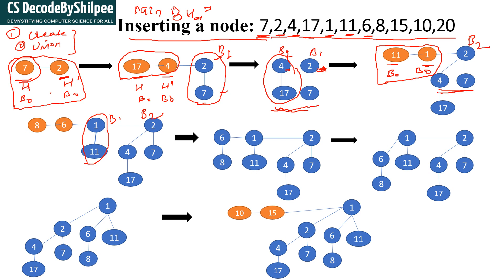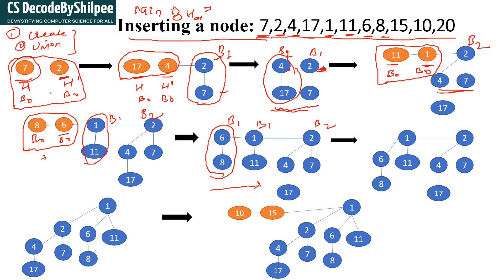The next element is 6, inserted with degree 0. Next element is 8, also with degree 0. Since both binomial trees have the same degree, we perform a union operation. After the union we get 6 as root and 8 as child, with degree 1. Now there are again 2 binomial trees with the same degree, so we perform another merging and get a tree with degree 2.